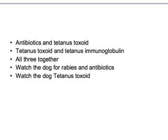So the answer is: antibiotics, tetanus toxoid, and tetanus immunoglobulins — these are very important points. Now, if the dog was unvaccinated or the vaccination status is unknown, you would also add the rabies vaccine. If the patient knows their tetanus status and the wound is dirty and they don't know their tetanus status, you can give tetanus immunoglobulins.